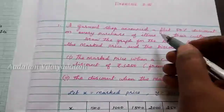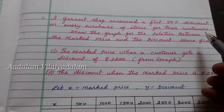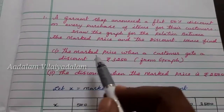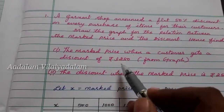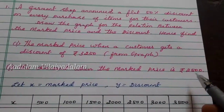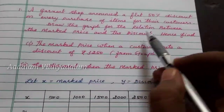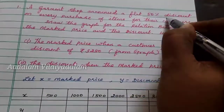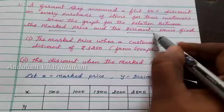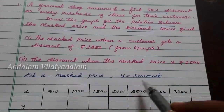First question: A government shop announces a flat 50% discount on every purchase of items for their customers. Draw the graph for the relation between the marked price and the discount. Find the marked price when a customer gets a discount of ₹3250 from the graph, and the discount when the marked price is ₹2500. We shall solve the problem. They have given 50% discount and the relation between marked price and discount. Therefore, we take x equal to marked price and y equal to discount as variables.